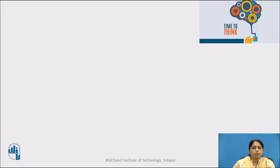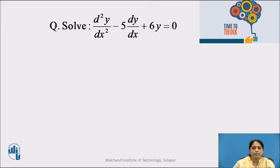Before starting the examples, please pause the video for a minute and find the answer to this example: solve d²y/dx² − 5 dy/dx + 6y = 0.